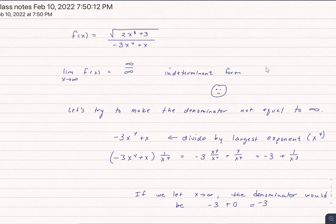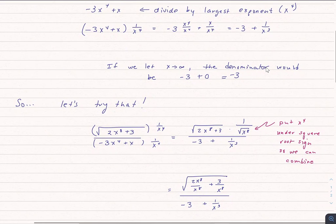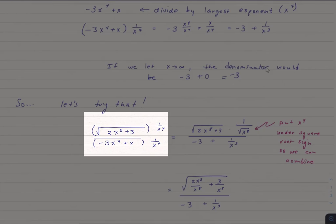So all right, let's go ahead and see if doing that fixes not only our denominator, but also our numerator. So of course, if we're going to do that, we're going to have to multiply both the numerator and the denominator by 1 over x to the fourth. Got to be fair.